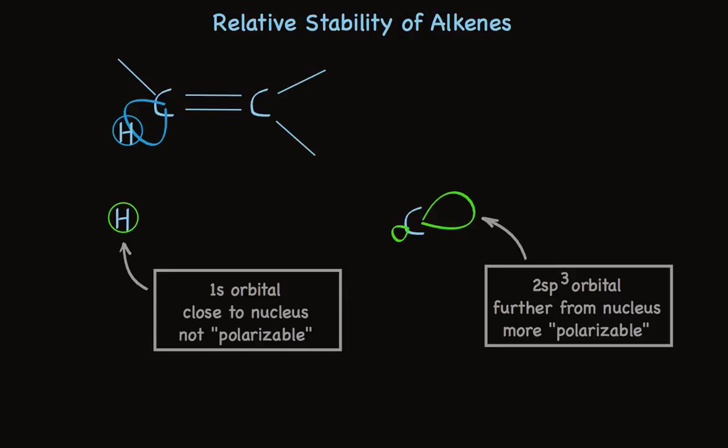Well, remember I said sp2 orbitals are more electronegative and have greater electron demand? Look what happens when a carbon bonds to an alkene. Instead of that simple overlap, like we see with the hydrogen to form the carbon-hydrogen bond, we see overlap between the sp3 orbital, which is distorted in shape, drawn more to the electronegative sp2 orbital. This increases the overlap and shifts electron density toward the carbon.